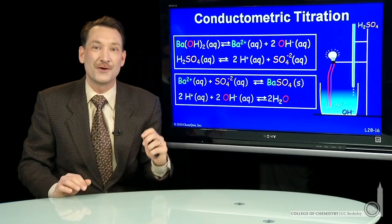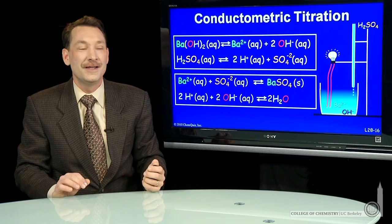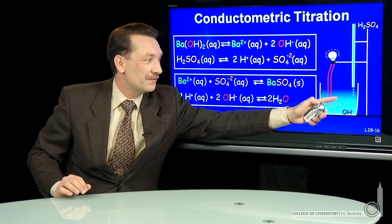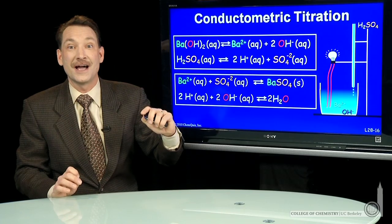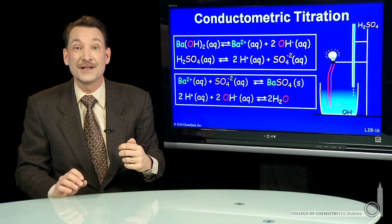If I added H2SO4, then those sulfate ions would find the barium ions, and the H plus ions find the hydroxide ions, and the overall number of ions would drop.